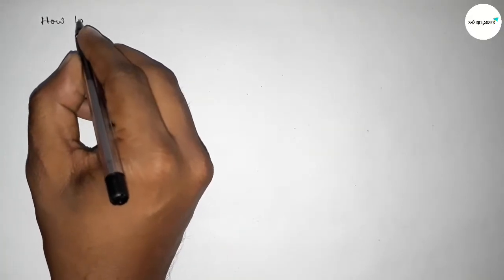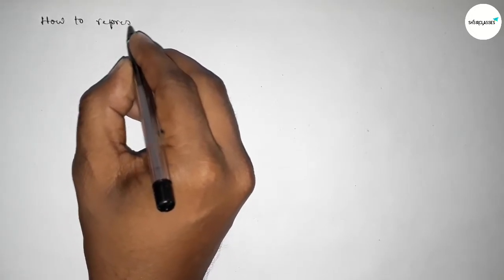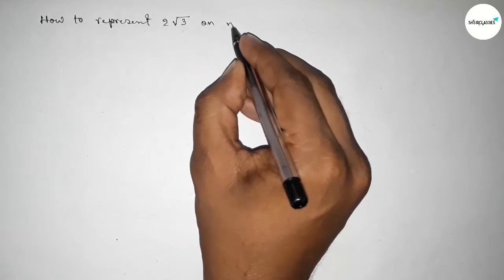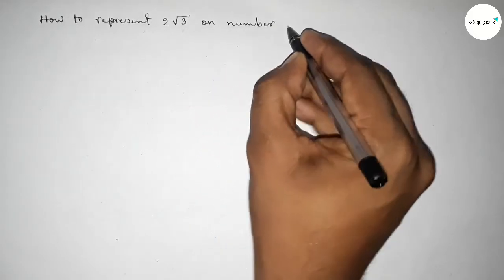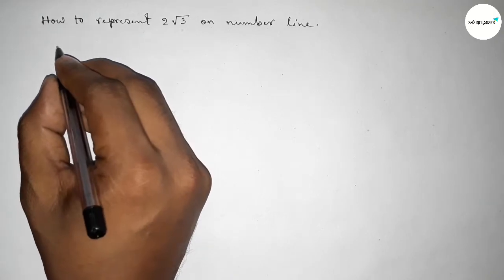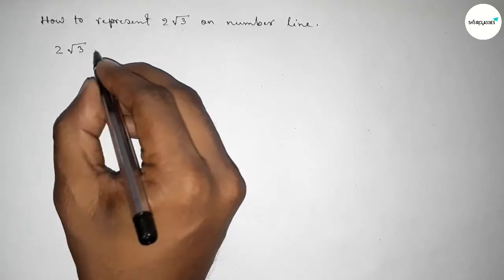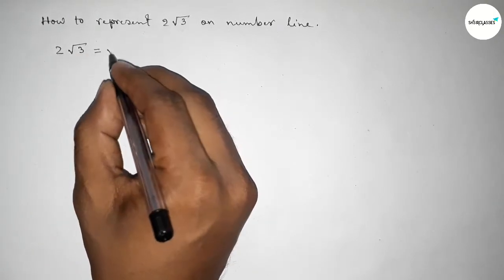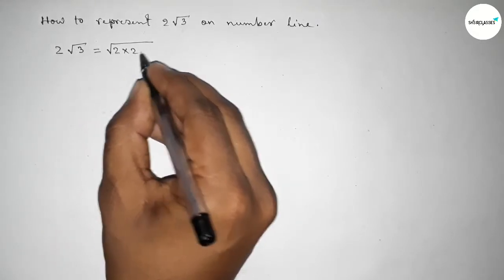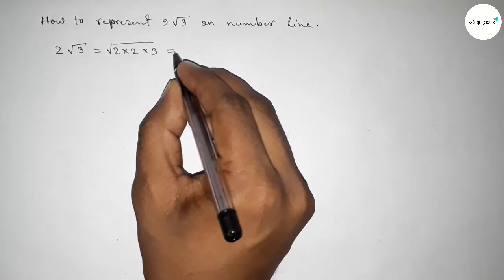Welcome to SSR Classes. Today in this video we have to represent 2√3 on the number line by using a compass in an easy way. First, we can write 2√3 as √(2×2×3), which equals √12.